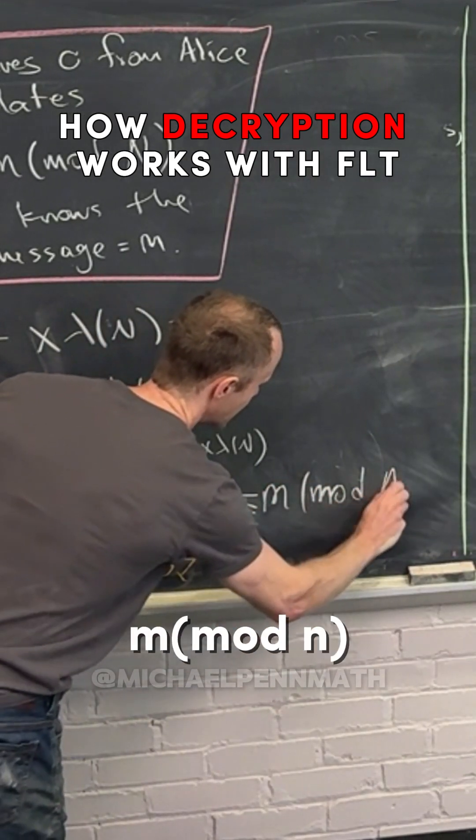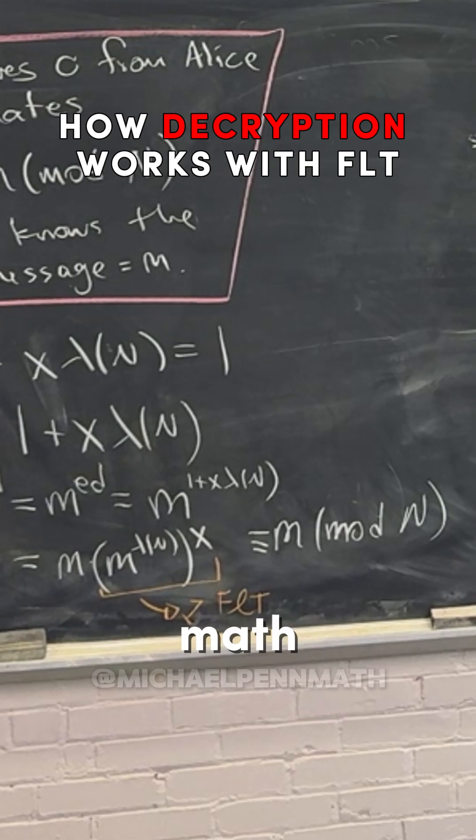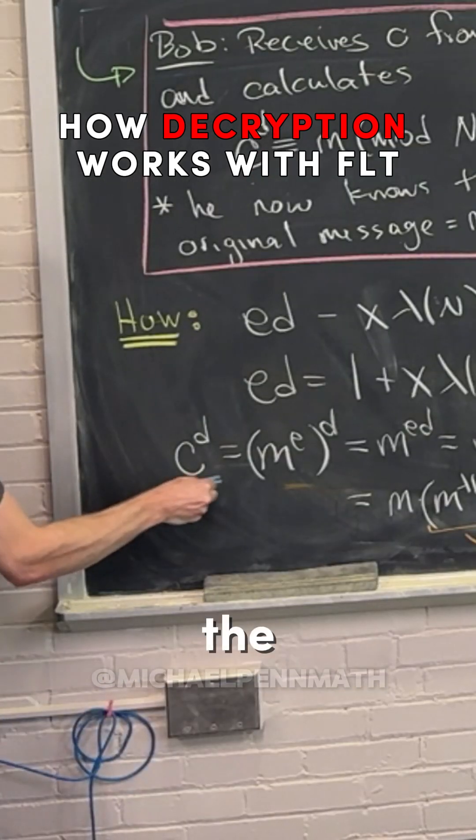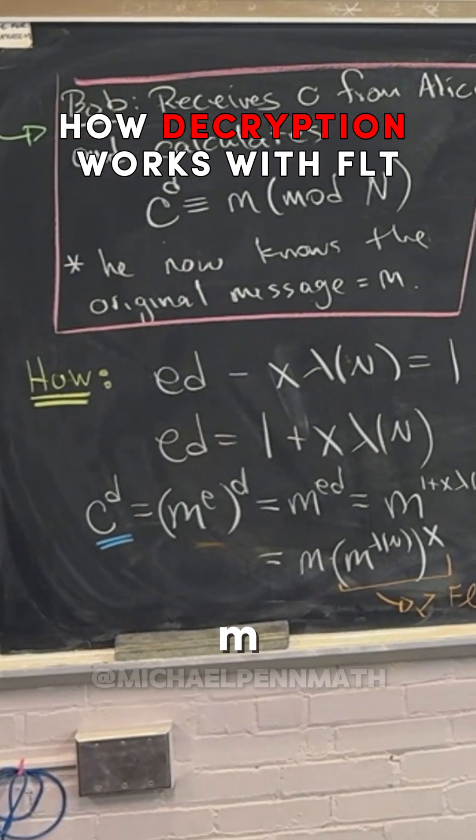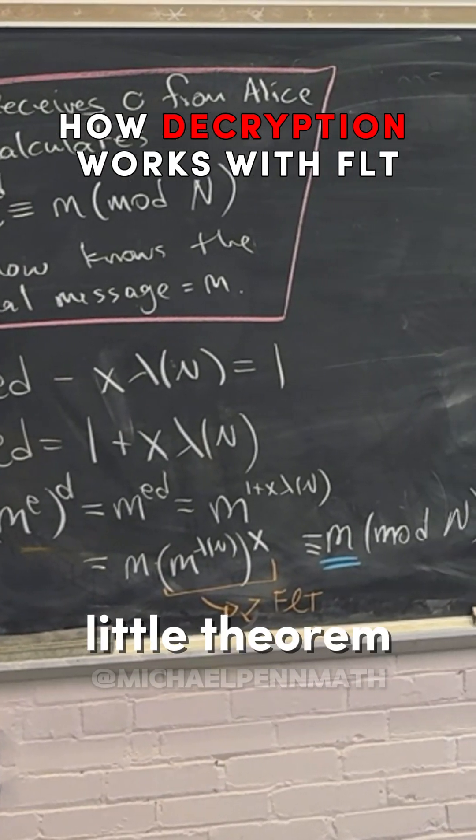And in the end, you have m mod n. So that's the math behind it, this is how the decoding works. c to the d turns out to be m because of, well, essentially because of Fermat's little theorem.